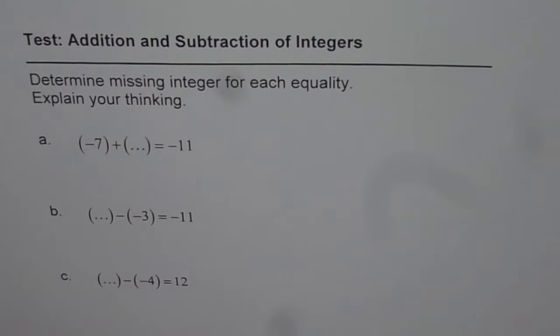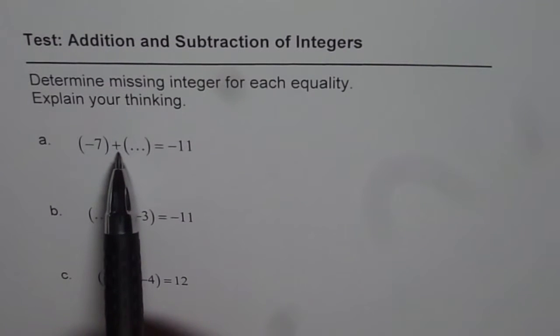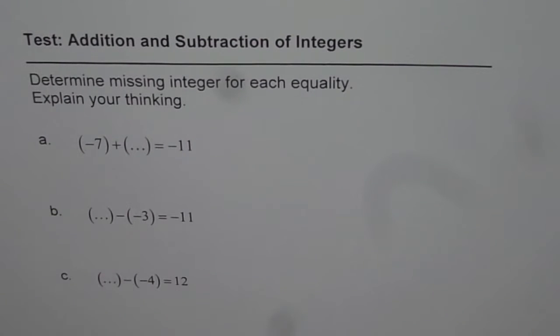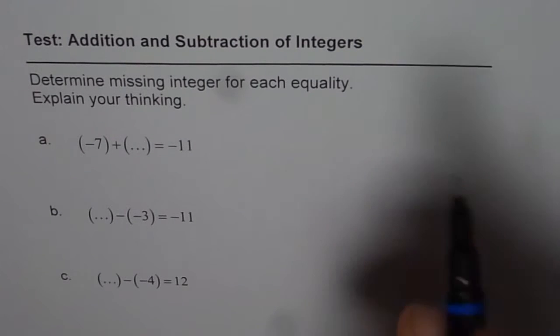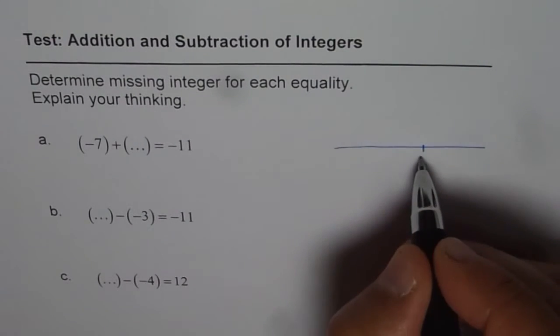Here is my suggestion. The first one is: what should you add to minus 7 to get minus 11? Well, if you see the number line, then let us say we are here at 0.